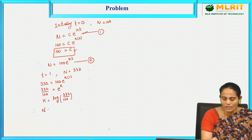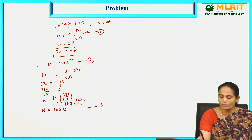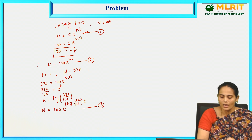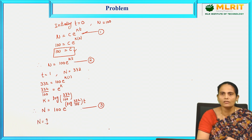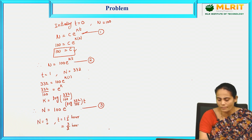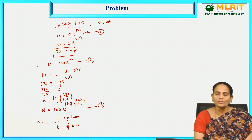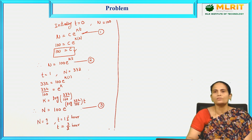Substituting the k value back into equation 2 gives equation 3: N = 100·e^(log(332/100)·t). Now to find the bacteria at t = 3/2 hours (1.5 hours), substitute t = 3/2 into equation 3.